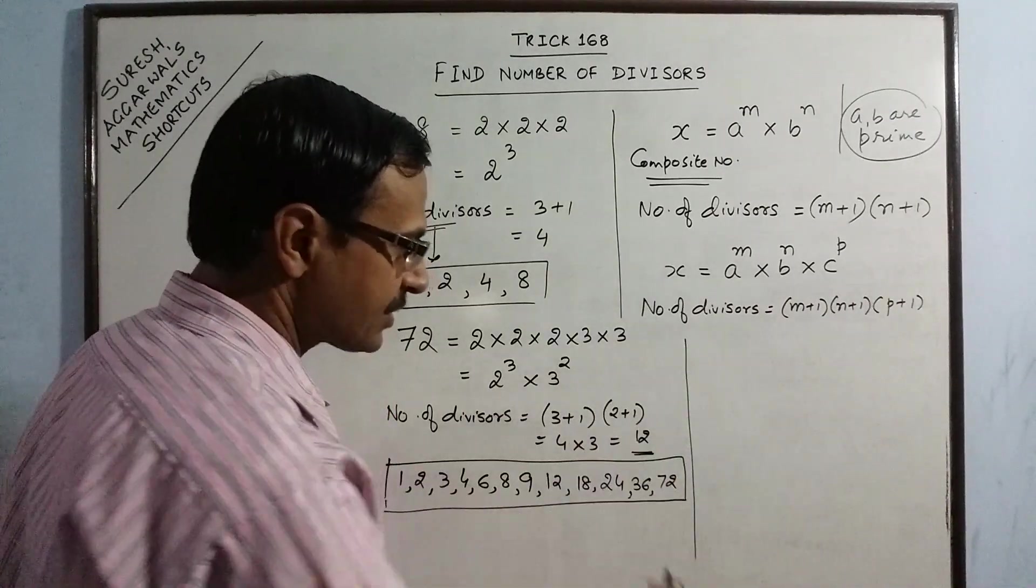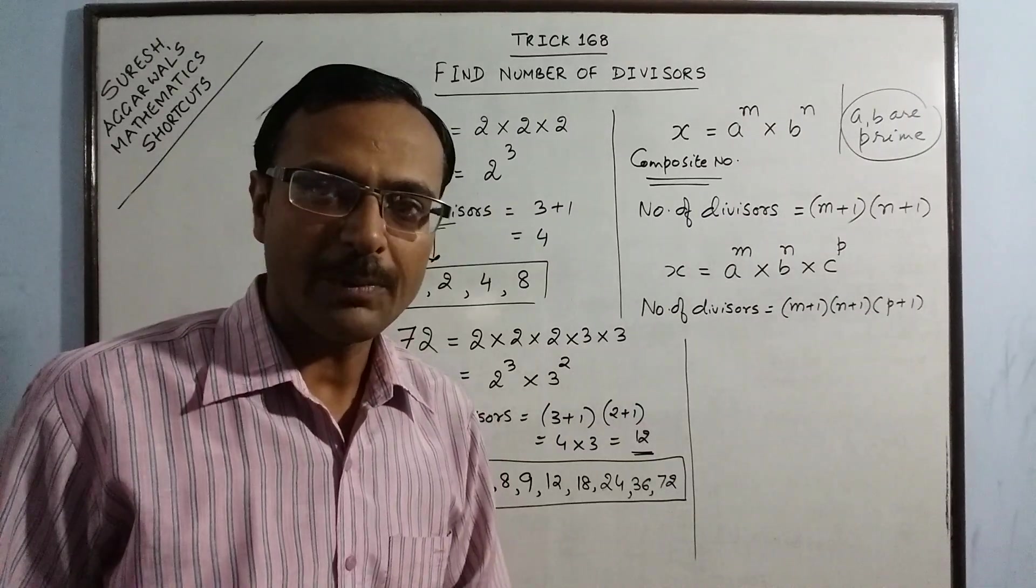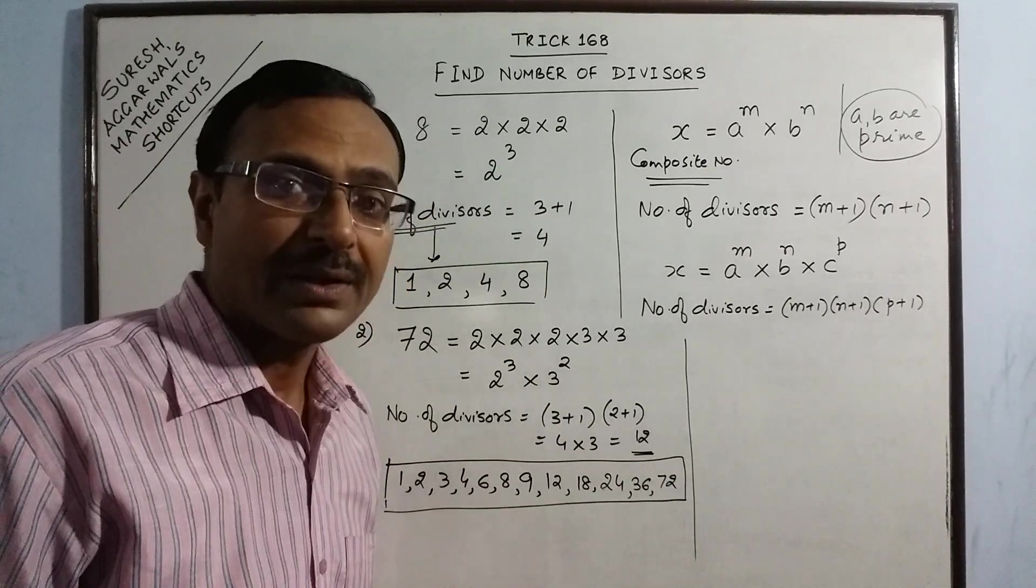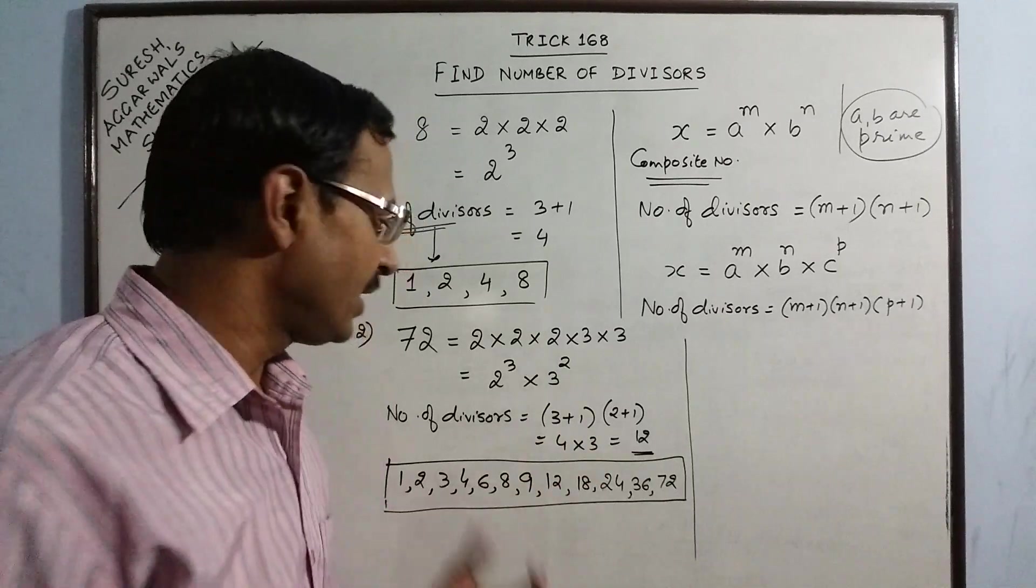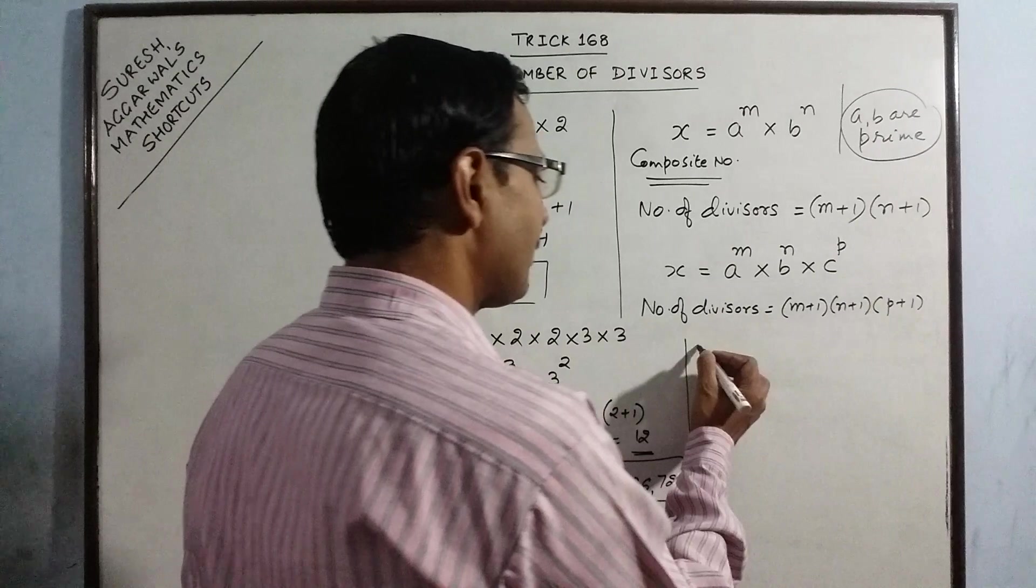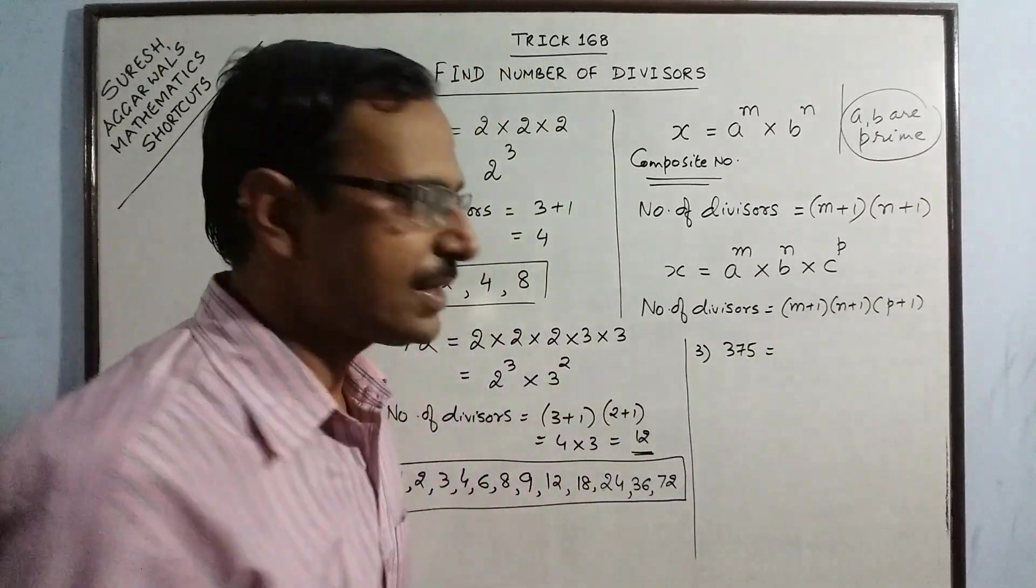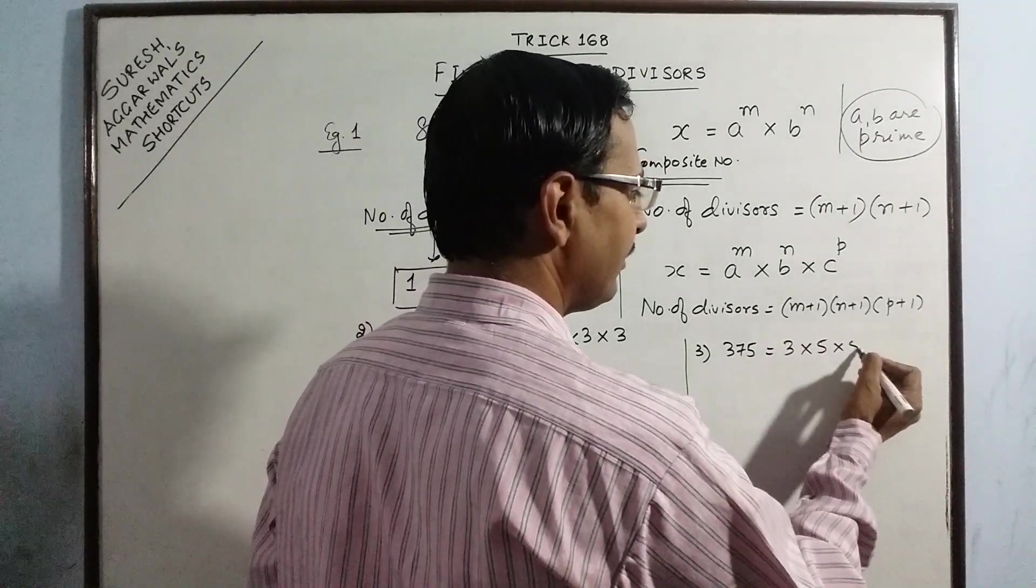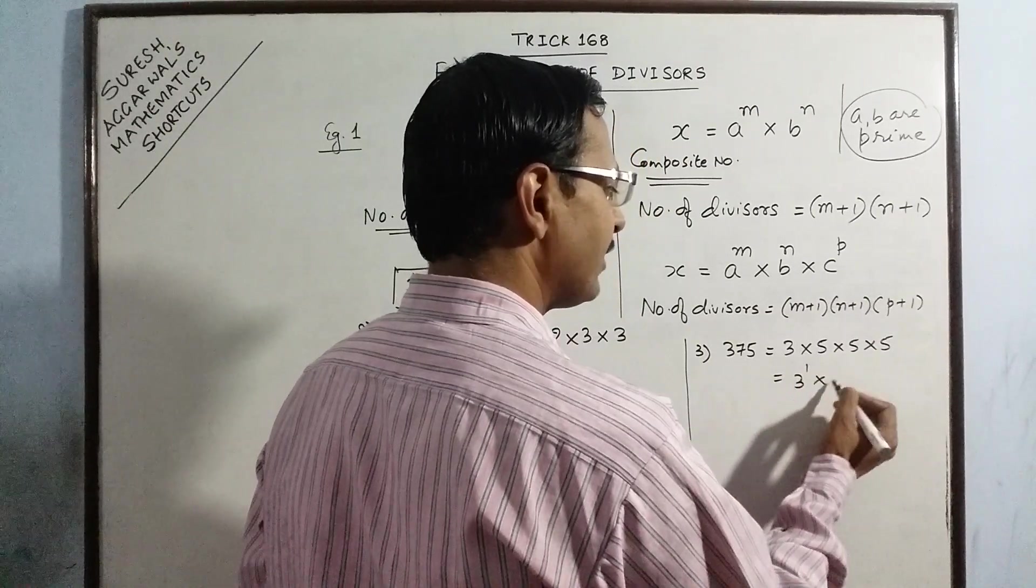Likewise if you take some larger numbers, you can very easily find the total number of divisors and when the students are asked to enlist the divisors of a particular number, they will not miss out any divisor because they will already know how many divisors does a particular number have. Now let us take one more example. Say we have 375. Now the factorization of 375 is 3 into 5 into 5 into 5.